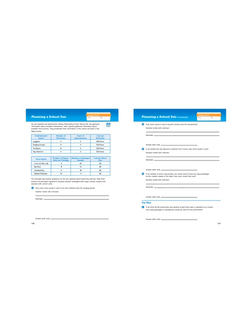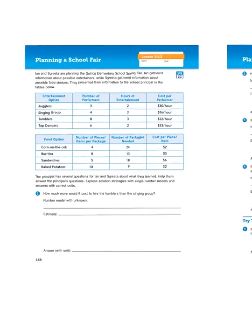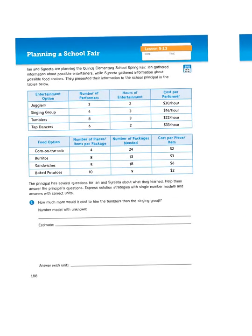So let's read the premise of these story problems. Ian and Sarita are planning the Quincy Elementary School Spring Fair. Ian gathered information about possible entertainers, while Sarita gathered information about possible food choices. They presented their information to the school principal in the tables below.